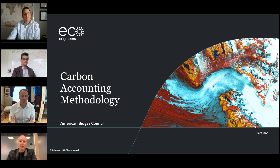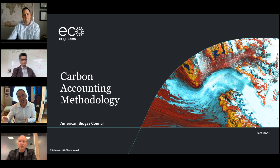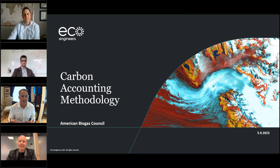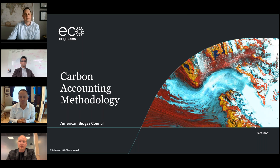We're creating an accounting methodology to determine the carbon impact of all kinds of biogas projects over the whole life cycle — so we can know how much carbon we're reducing, when we're reducing a lot and get rewarded for that, and when we're not reducing enough and adjust accordingly. The American Biogas Council hired EcoEngineers earlier this year to lead that development. The ABC is developing this, but we don't plan to own it — we want others to use it. That's where we'll really get the benefit.